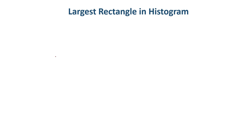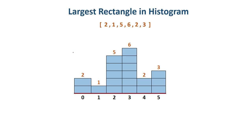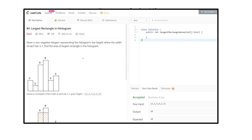Hello everyone. Today we will talk about a problem known as largest rectangle in a histogram. We will be given one array of positive numbers, maybe zero also, and we have to form a histogram out of it. The bar lengths are the numbers: 2, 1, 5, 6, 2, 3. We have to find the largest rectangle from this histogram. You can find this problem on LeetCode number 84, largest rectangle in histogram.